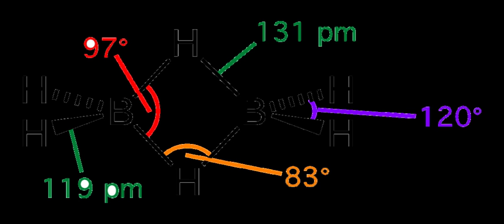The bonding between the boron atoms and the bridging hydrogen atoms is, however, different from that in molecules such as hydrocarbons. Having used two electrons in bonding to the terminal hydrogen atoms, each boron has one valence electron remaining for additional bonding.